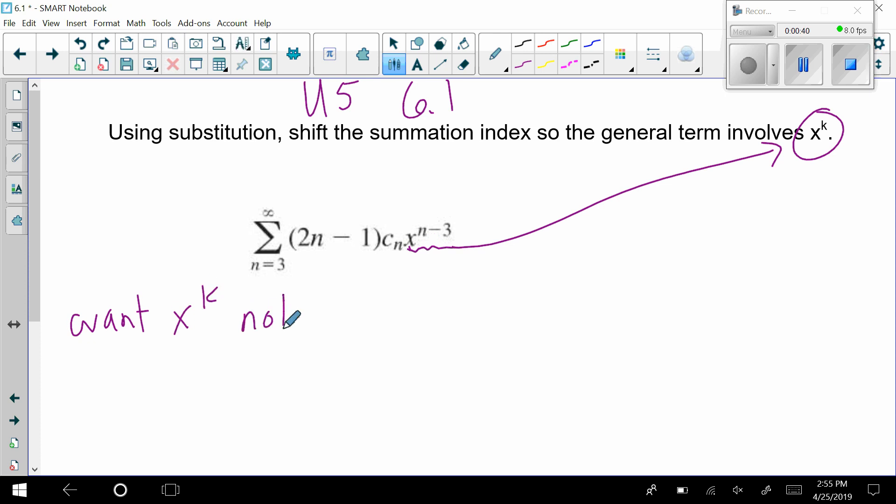So I don't want n minus three. I just want the power to be k, not n minus three. So make my k equal to n minus three. That should make sense because then I can just plug it in, which implies, thus, n equals k plus three, just simple addition across.